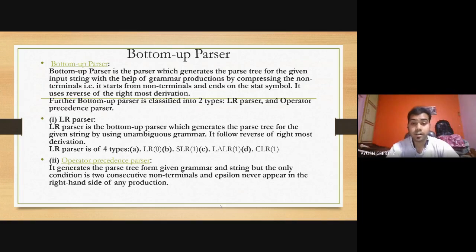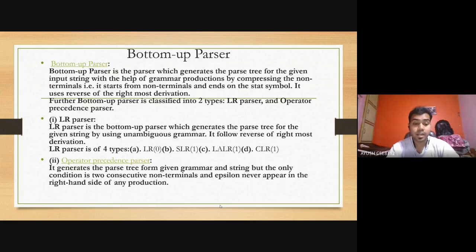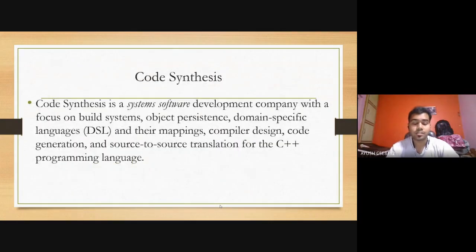The second type of bottom-up parser is the operator precedence parser. It generates the parse tree from a given grammar and string, but the only condition is that two consecutive non-terminals and epsilon never appear on the right-hand side of any production.